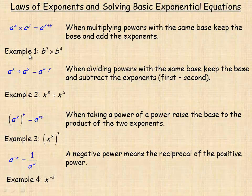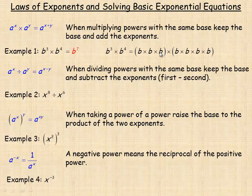In example one, b cubed times b to the fourth equals b to the seventh. You keep the same base — both were b — and add the two exponents: three and four add to seven. To show why that's true, b cubed means three b's multiplied together, and b to the fourth means four more b's multiplied. All together there are seven b's, which is why we simplify to b to the seventh.